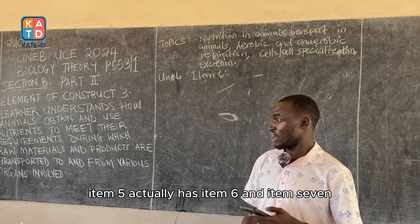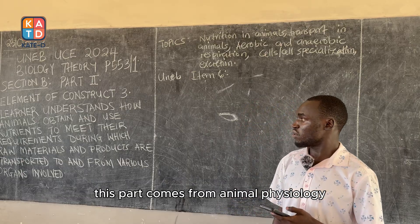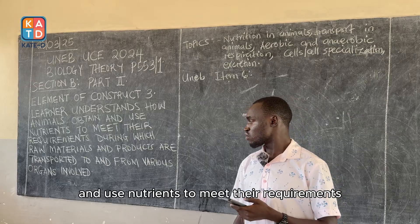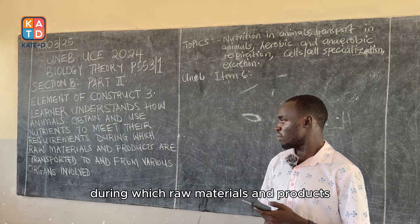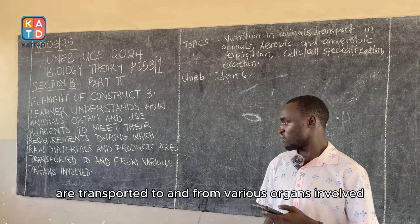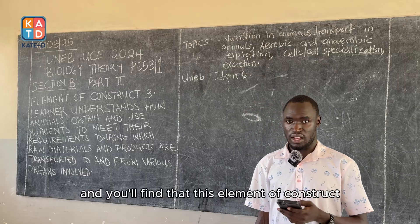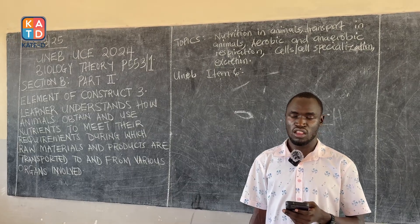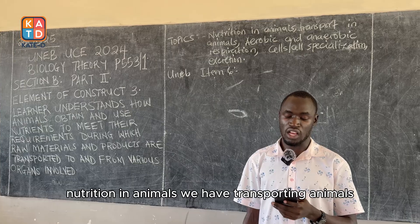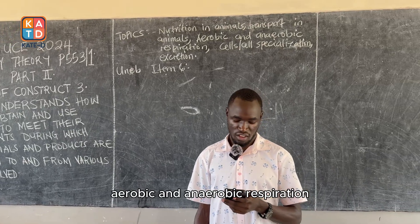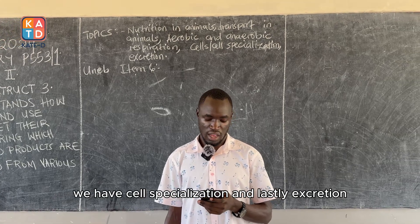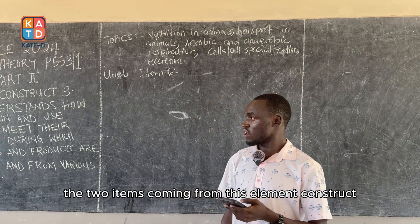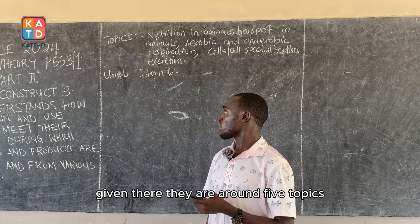This part comes from the element of construct theory, which says the learner understands how animals obtain and use nutrients to meet their requirements, during which raw materials and products are transported to and from various organs involved. This element of construct covers topics like nutrition in animals, transporting in animals, aerobic and anaerobic respiration, cell specialization, and excretion. The two items coming from this element of construct must fall under those five topics.